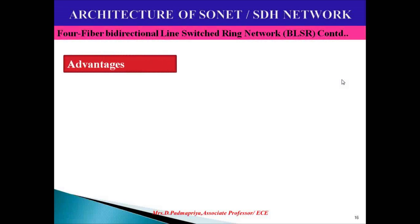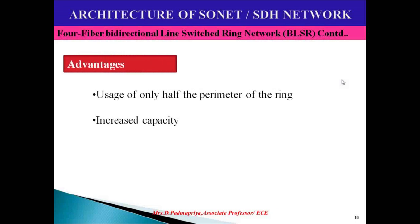The advantages of BLSR are that only half the perimeter of the ring is used, and there is increased capacity since it uses twice as much fiber cabling. Compared to the unidirectional path switch ring, the bidirectional line switch ring is more advantageous.